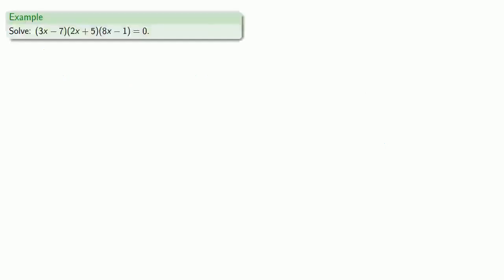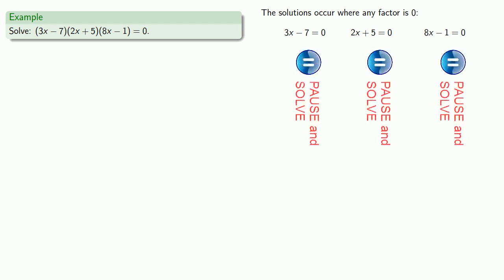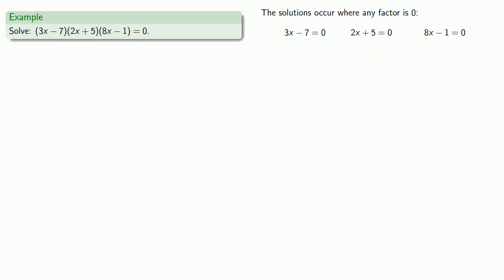As a concrete example, suppose I have this product equal to zero, then my solutions are going to occur where any factor is zero. So either 3x minus 7 is zero, 2x plus 5 is zero, or 8x minus 1 is equal to zero. And solving each of these three equations gives us three roots: 7 thirds, minus 5 halves, and 1 eighth.